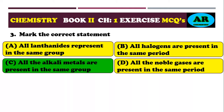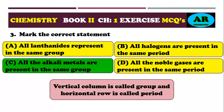All alkali metals are in group 1A, and elements in the same vertical column are in the same group. Horizontal rows are called periods. The correct option is charlie.